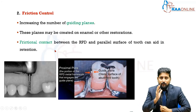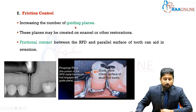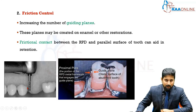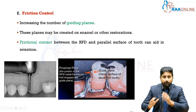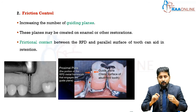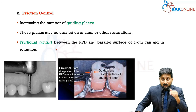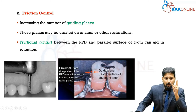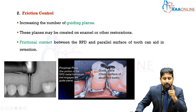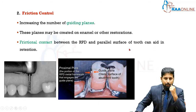Next is frictional control. Frictional resistance to displacement is also a type of retention. Increasing the number of guiding planes is important. A guiding plane is the flat surface you create on the proximal aspect of your primary abutments so that they are contacted by the proximal plate or minor connector portion of the RPD. These two flat surfaces slide against each other whenever the patient inserts and removes the RPD, creating frictional contact that increases retention. It will not be easy for the RPD to get dislodged if you have good frictional contact between the proximal plate of the RPD and the guiding plane on the proximal surface of the abutment tooth.